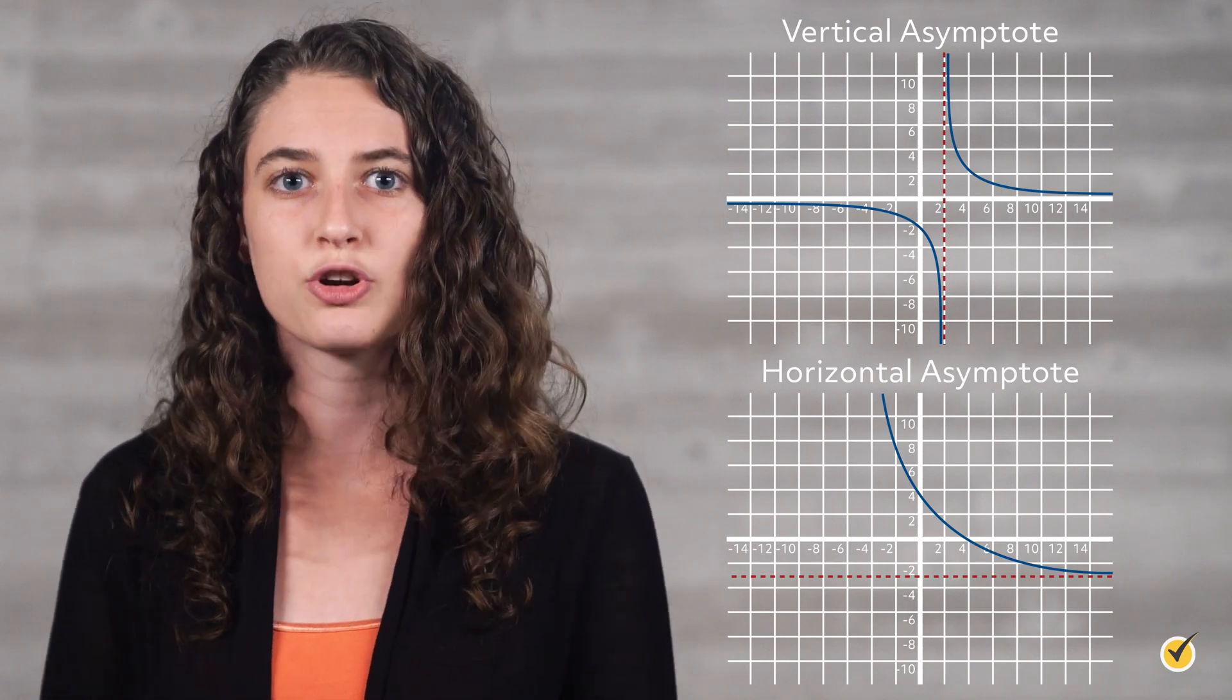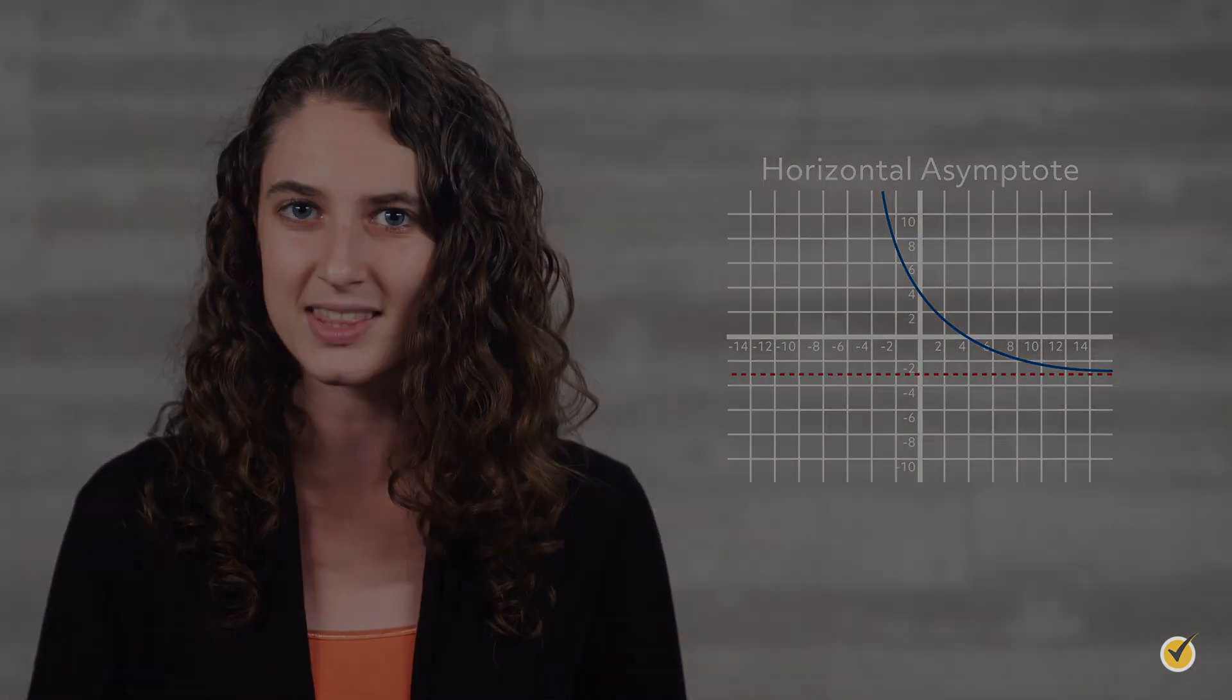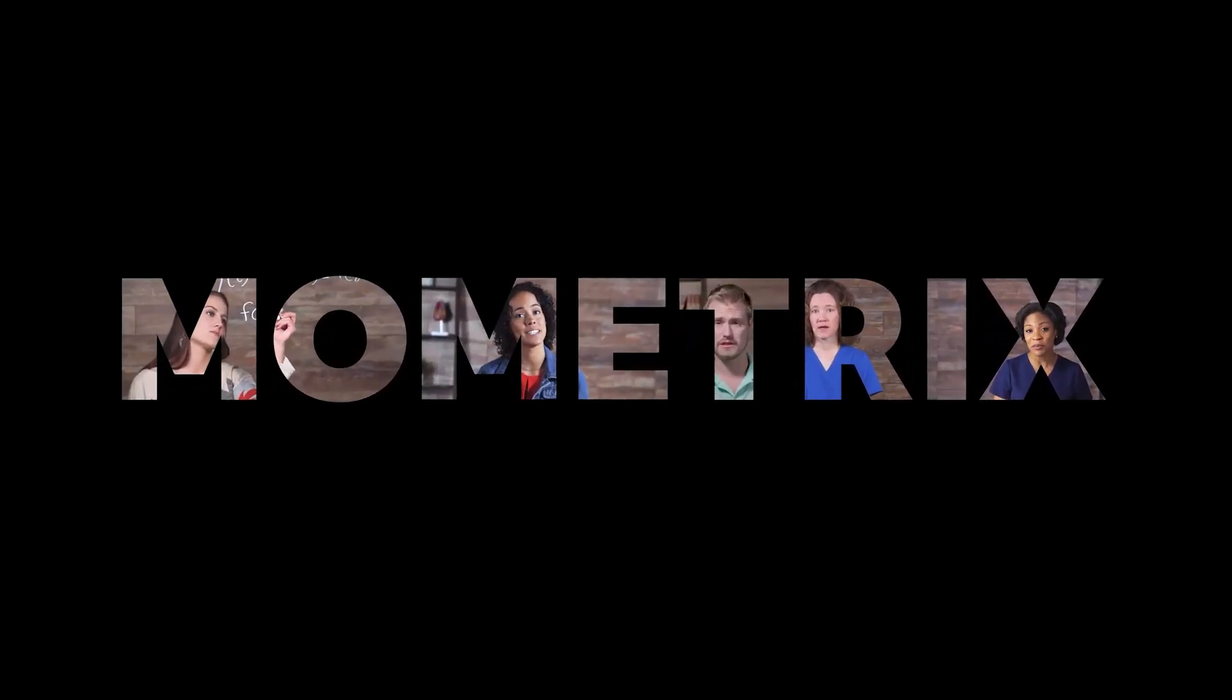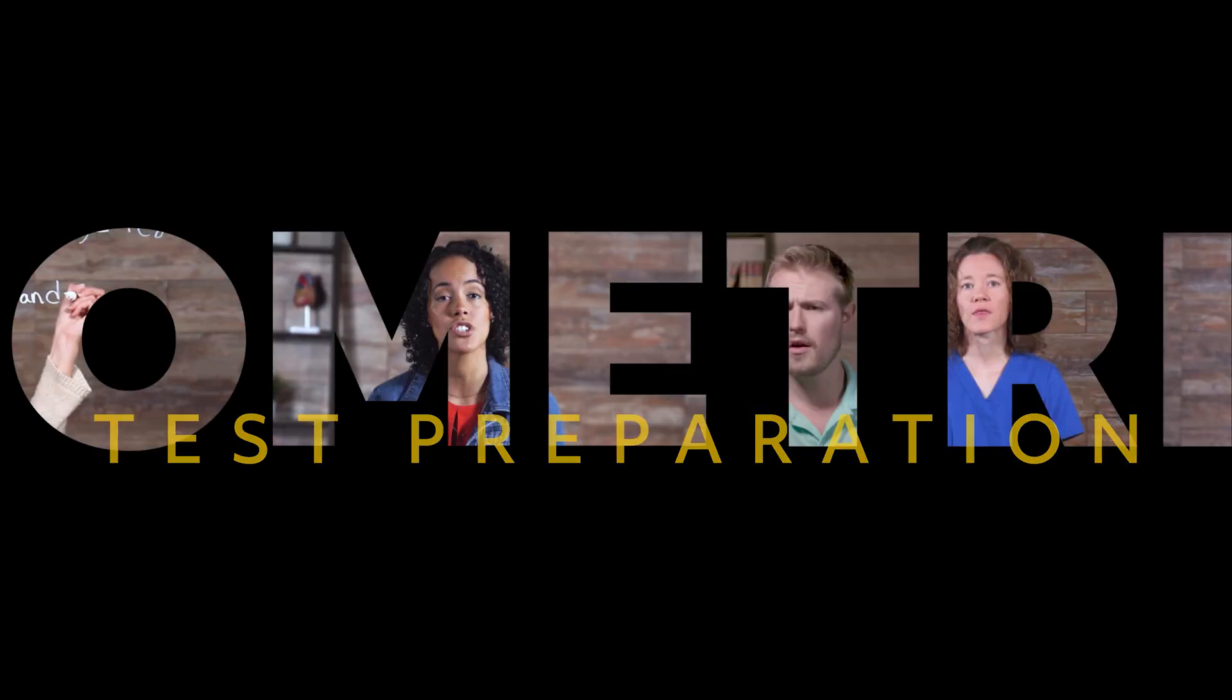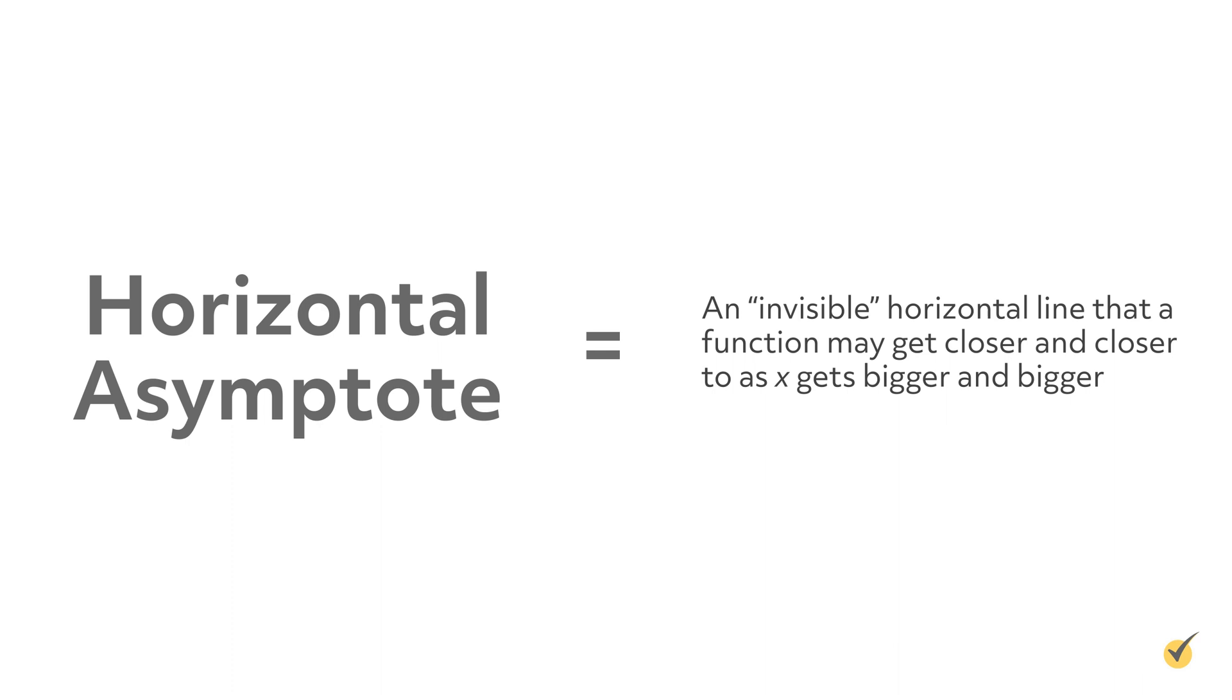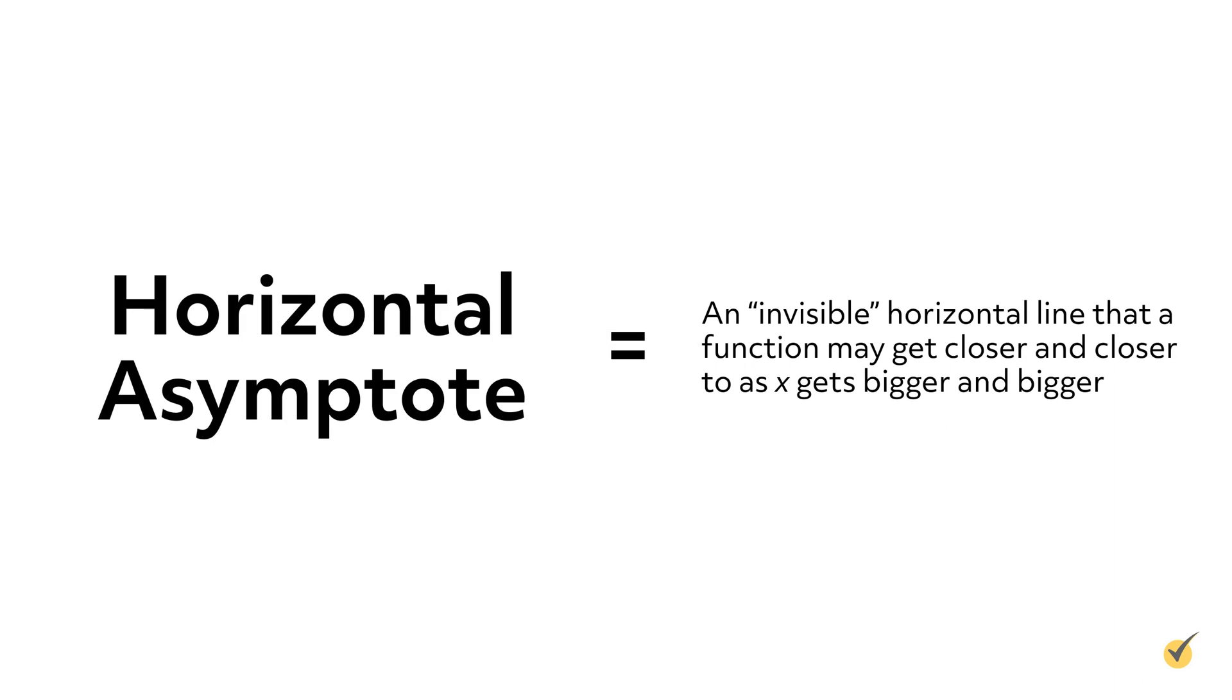In this lesson, we are going to focus on horizontal asymptotes and discuss how to find them. A horizontal asymptote is an invisible horizontal line that a function may get closer and closer to as x gets bigger and bigger.